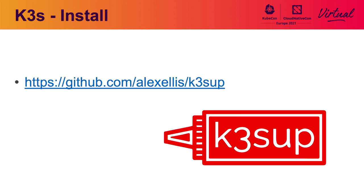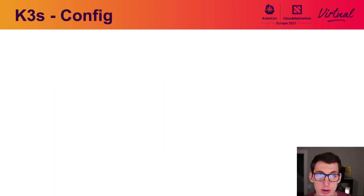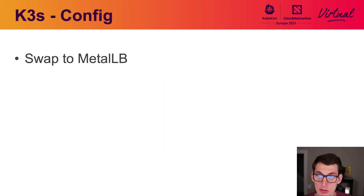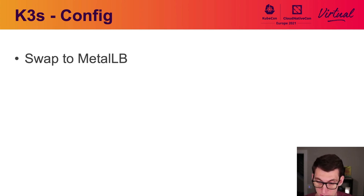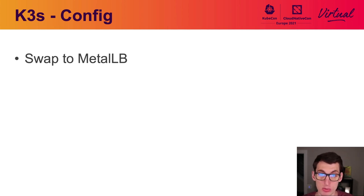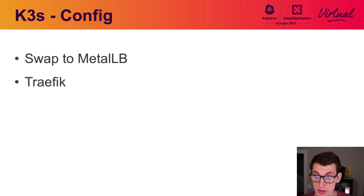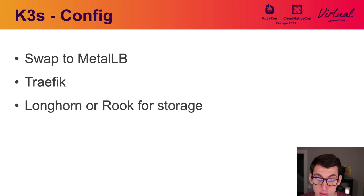For installing K3S, we recommend checking out Ketchup by Alex Ellis — he has tons of content about Kubernetes, K3S, and Raspberry Pi. Ketchup is a very simple installer for K3S that can also add a bunch of other add-ons and Helm charts. For configuring your K3S cluster, swap out the built-in load balancer to MetalLB, which lets you use your home network IP space for load balancers and map multiple services to the same IP address using different ports. Traefik comes installed by default and is a great ingress controller out of the box. For persistent storage, check out either Longhorn or Rook.